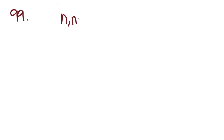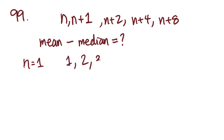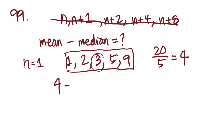Problem 99: for the positive numbers n, n+1, n+2, n+4, and n+8, the mean is how much greater than the median? Let's plug in n equals 1, giving us 1, 2, 3, 5, and 9. The median is 3. Adding them up: 1+2+3+5+9 = 20, divided by 5 gives a mean of 4. So 4 minus 3 equals 1. That's answer choice B.